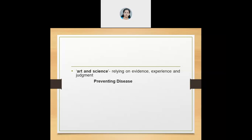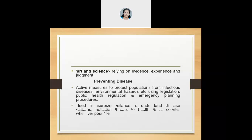Public health is also about preventing disease. Along with addressing a particular disease, equal emphasis has been given to prevention of disease, with active measures to protect the population or community from infectious diseases and environmental hazards. They can use varying strategies such as legislation, public health regulations, emergency planning procedures, and measures to have proper surveillance so that the pattern of new outbreaks could be understood.